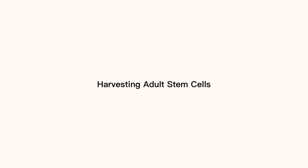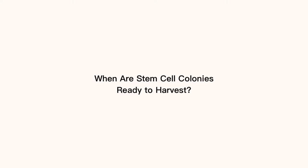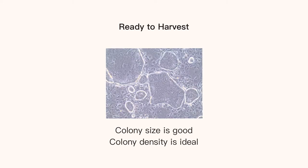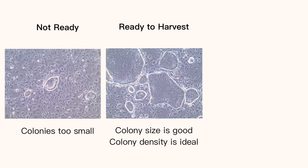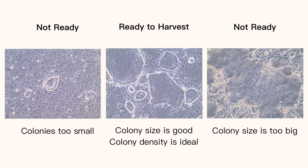Mimics expansion media is designed for the rapid proliferation of adult stem cells. Adult stem cells are ready for harvesting when they have reached 70% confluency. The size and spacing of colonies within the plate are important when identifying whether your cells are ready to harvest. The image on the left shows adult stem cell colonies that are well spaced but too small for harvesting.